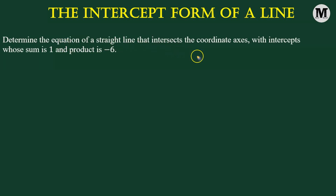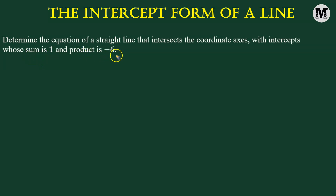Determine the equation of a straight line that intersects the coordinate axis with intercepts whose sum is one and product is negative six. Let us begin.